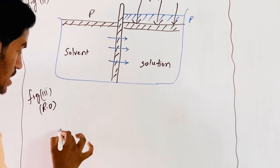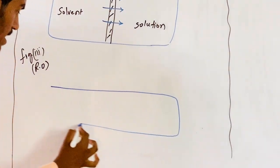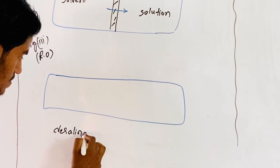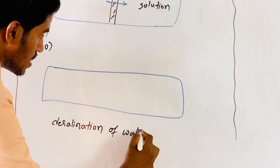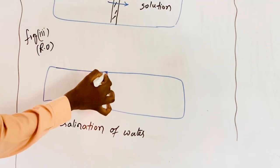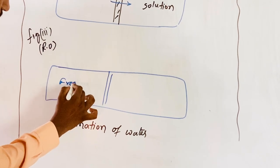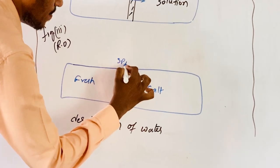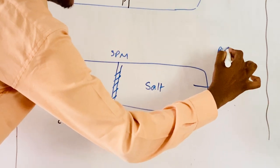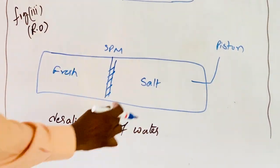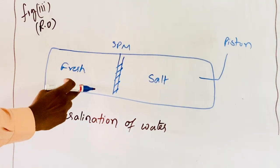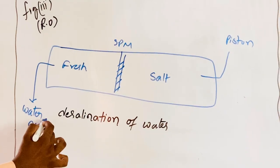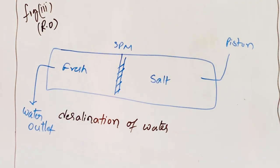Coming to Reverse Osmosis — reverse osmosis is illustrated by the desalination of water. Solutions of fresh water and salt water are separated by a semi-permeable membrane. By using a piston, pressure is applied on the salt solution to drive the solvent molecules back, and fresh water is obtained as the outlet. This process is known as reverse osmosis.